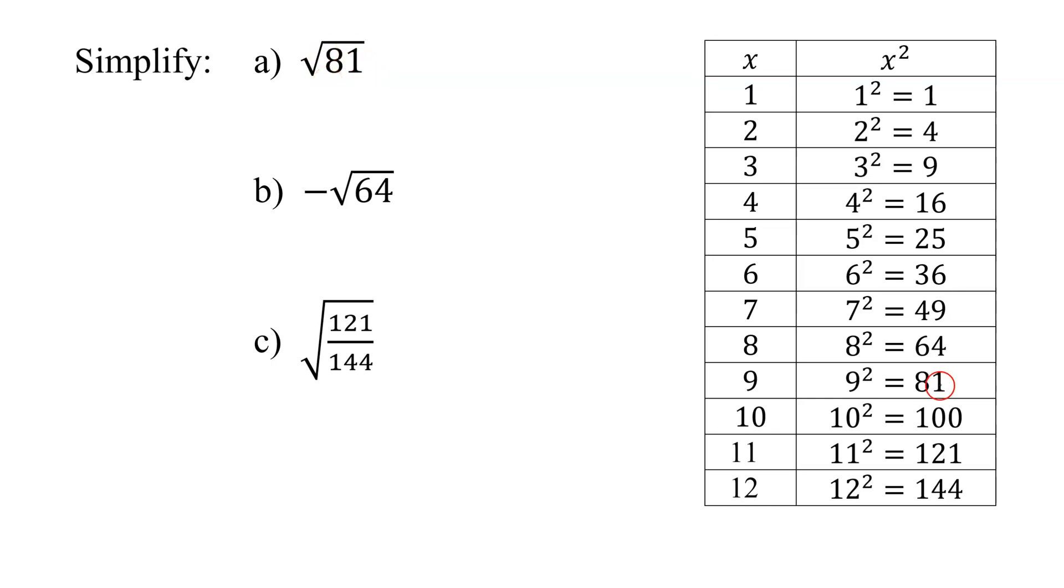So is 81 a perfect square? Yes, it's 9 squared. So what is the square root of 81? What number, multiplied by itself, gives me 81? And the answer is 9.